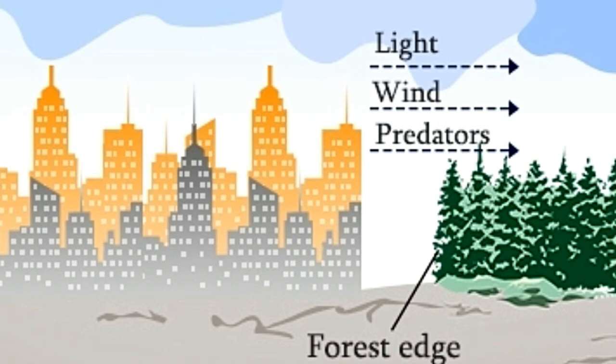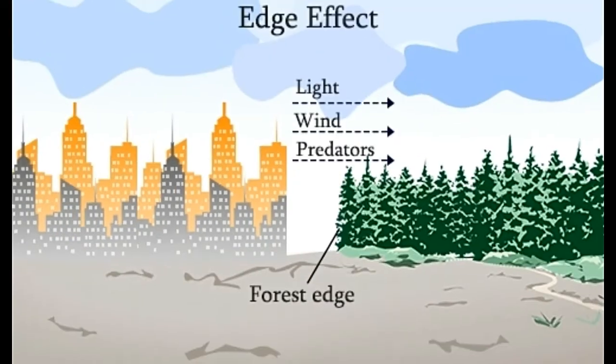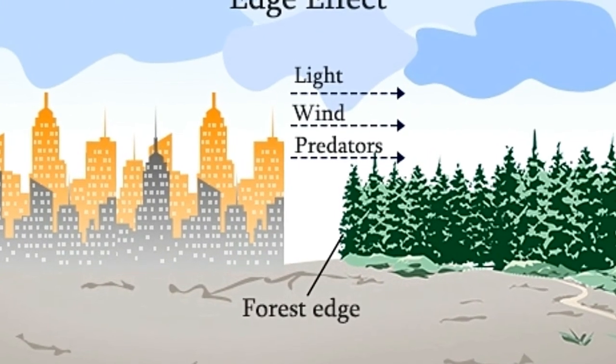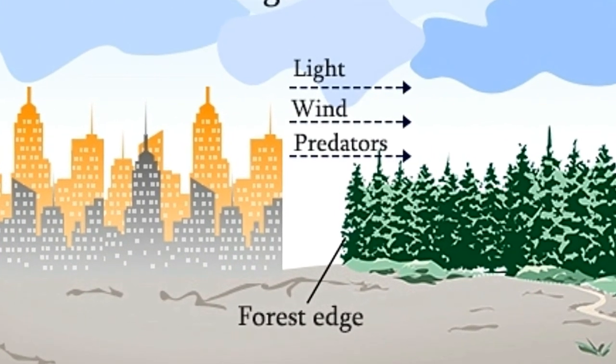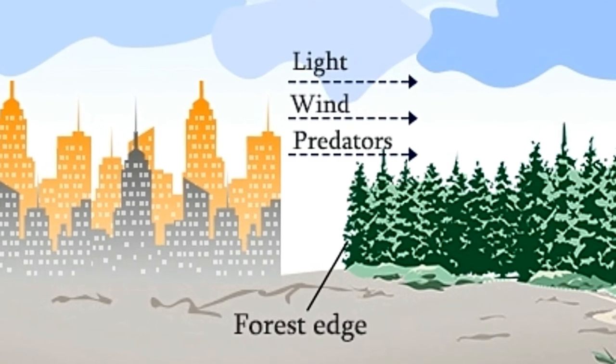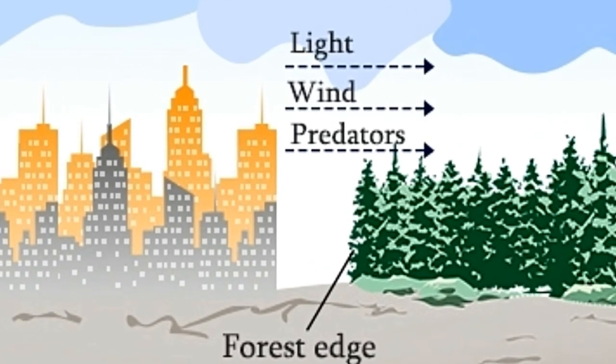Powerful winds can uproot and destroy trees or hit them with debris. Plants which need moderate temperature and light, as is found within the forest, may not survive at the edge. It hampers the life cycle of some organisms, thus disturbing their role in the forest.